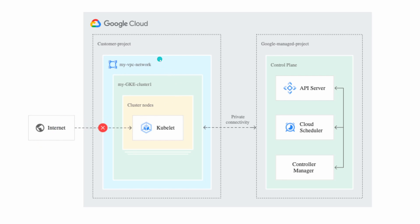As you can see in this picture, when you create a private cluster it is created in your VPC — let's say 'my GKE cluster one' — with your worker nodes inside. The control plane is created in a Google-managed project and has its own VPC, peered through the private network so that communication between your worker nodes and the control plane happens over a private network. This is what Google recommends for production workloads.